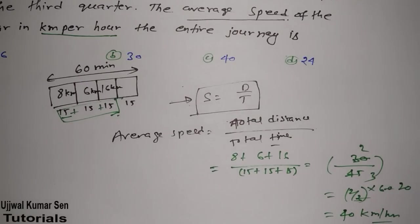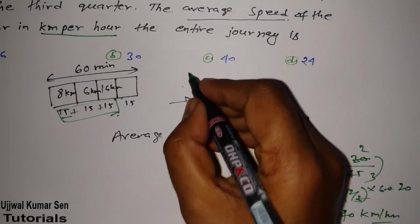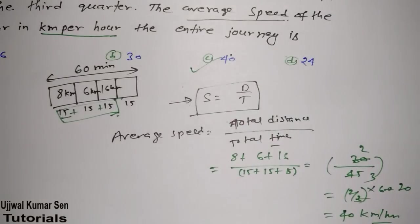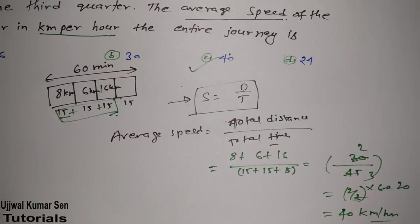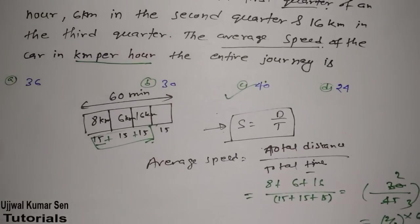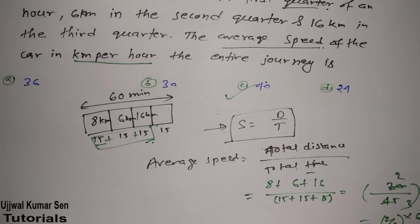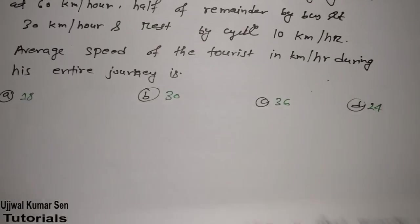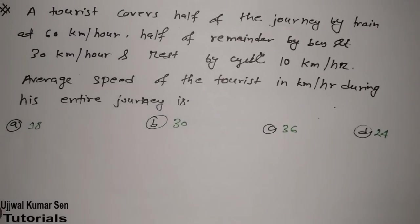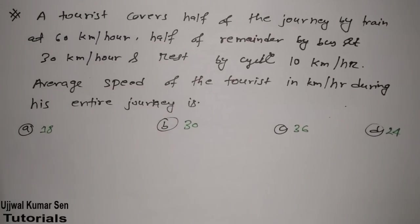You can easily check and find that the correct answer is option C — 40 kilometers per hour. I hope you understand this question. Let's move on to the next problem, which was also asked in GATE previous year and is equally interesting.